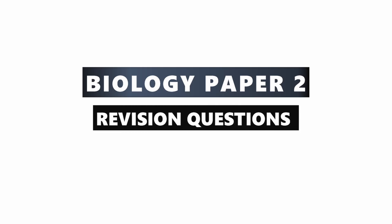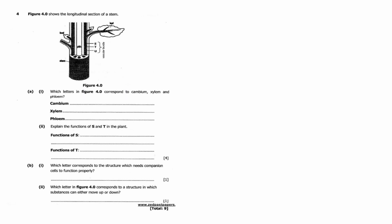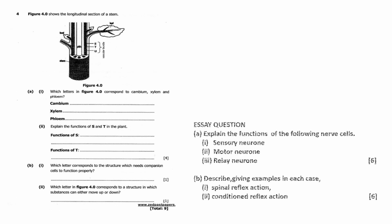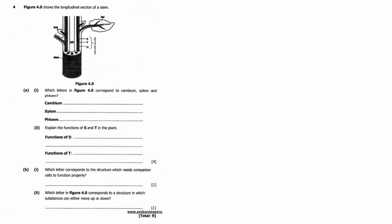Okay, so in this video we're going to revise some questions from Biology Paper 2. This question is from Section B and the second question is an essay question. All right, so let's begin. Figure 4.0 shows the longitudinal section of a stem.